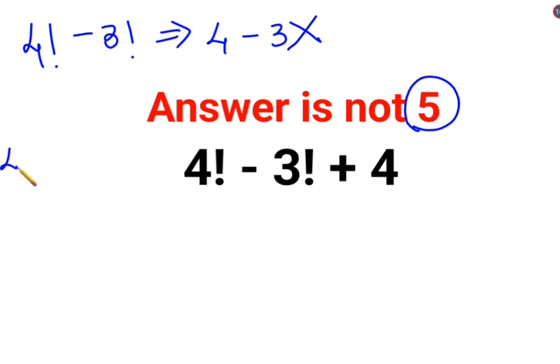Whenever you have a factorial, it means you need to do the expansion of products. How do you do it? You just multiply it with the next consecutive number. But you keep doing this in the decreasing order till the time you reach the value of 1.